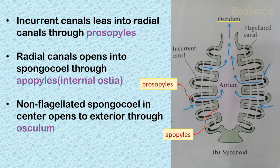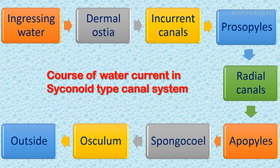In the sycon-type canal system, the spongocoel is a narrow non-flagellated cavity lined by pinacocytes, and it opens to the exterior through an excurrent opening called the osculum. The course of water currents in the sycon-type canal system is: ingressing water enters from the dermal ostia into the incurrent canals, passes through prosopyles into the radial canals, then enters the spongocoel through apopyles, and finally the water exits through the osculum into the outside environment.